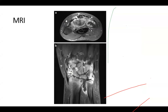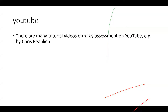Here are some MRI pictures. Here you can see the Manerfeld crypt described before, inflammation everywhere, a big effusion in the distal radioulnar joint, and further effusions. You don't really need to be able to diagnose that yourself — you will usually have your radiologist who will tell you this is typical for rheumatoid arthritis. There are also tutorial videos on X-ray assessment on YouTube, for example from a presenter called Chris Beaulieu, who makes very good videos on how to assess rheumatoid arthritis on X-rays.